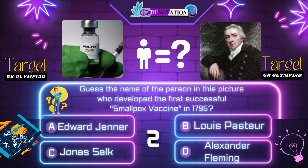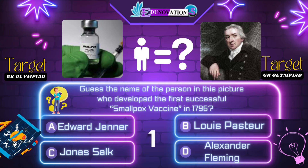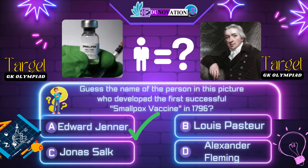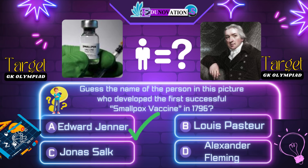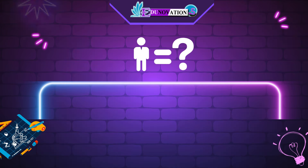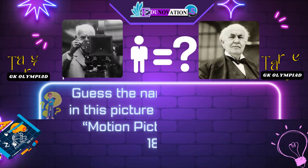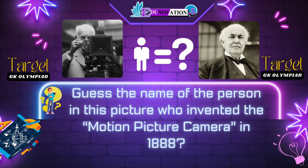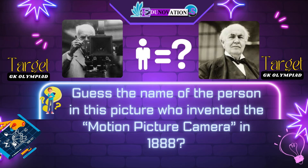Next question. Guess the name of the person in this picture who developed the first successful smallpox vaccine in 1796. Your options are: A. Edward Jenner, B. Louis Pasteur, C. Jonas Salk, D. Alexander Fleming. Time's up. Correct answer is A. Edward Jenner.